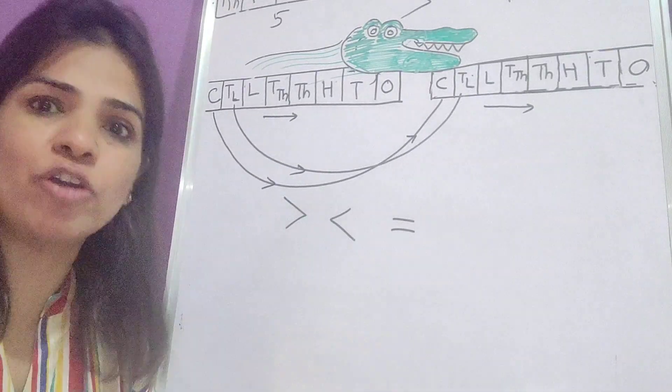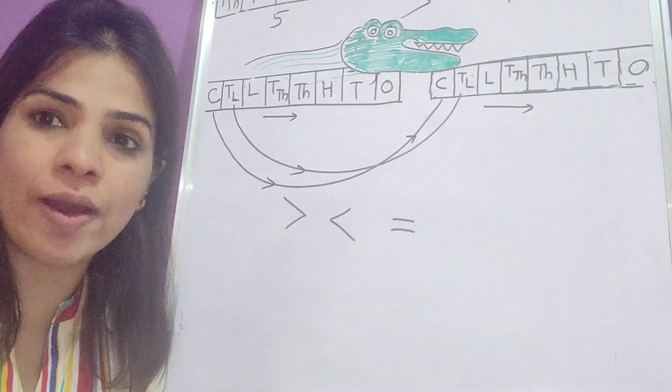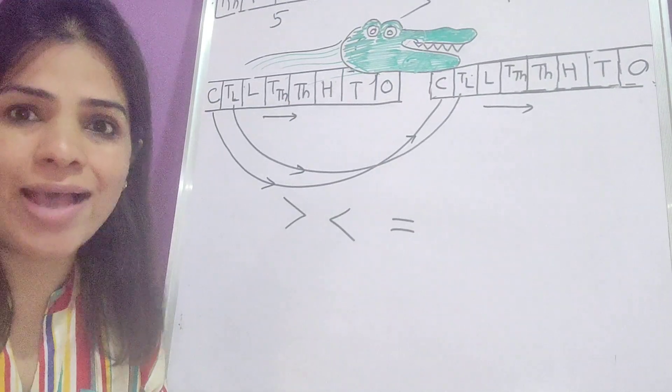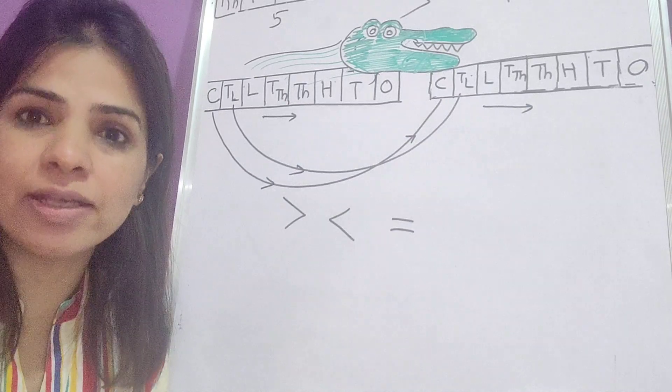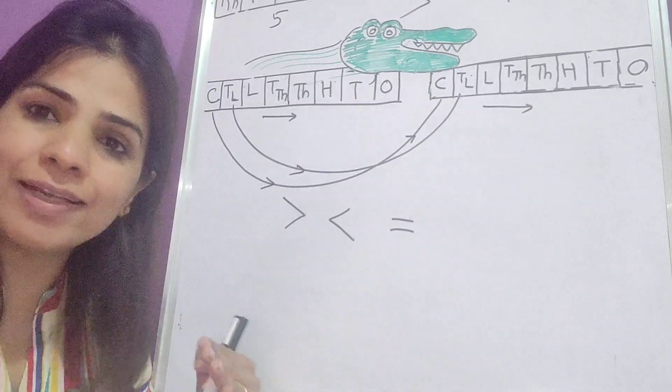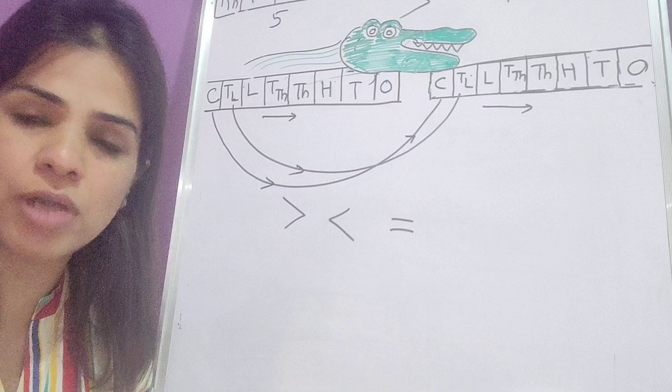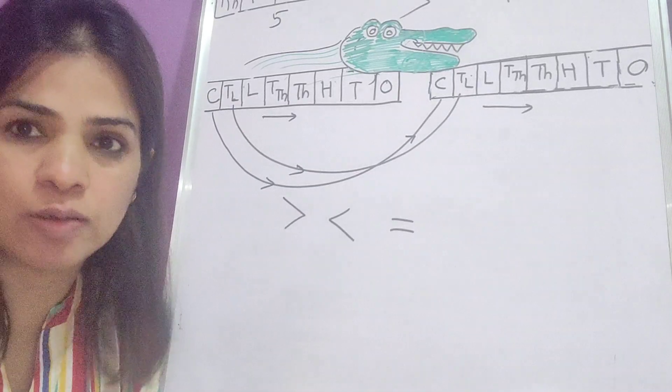Now when you are given a set of numbers together and you have to arrange them in order, as I told you at the start of the video, you have to arrange them in ascending or descending order. That is, do the comparison between the two numbers and go on placing it accordingly.